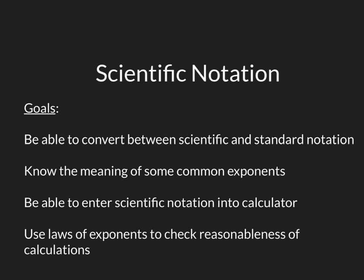Everything we're going to talk about today is pretty much a review of what you do in your math classes, so this is just a refresher. What we want to be able to do is convert between scientific and standard notation. You should understand that 1.2 times 10 to the 2 is the same thing as 120. Some of the most common exponents, we'll go over that, and be able to enter scientific notation in your calculator. We'll also review your laws of exponents just to see if our answers are reasonable.